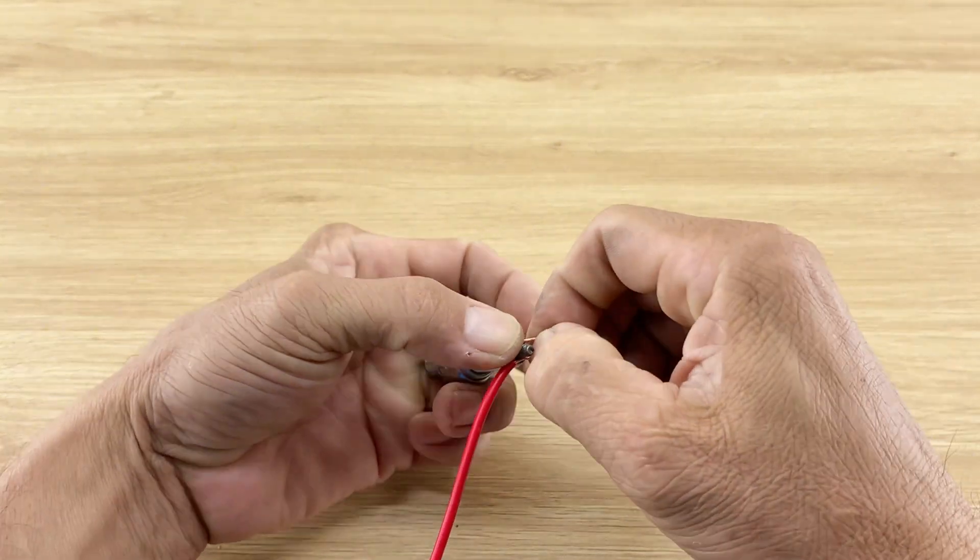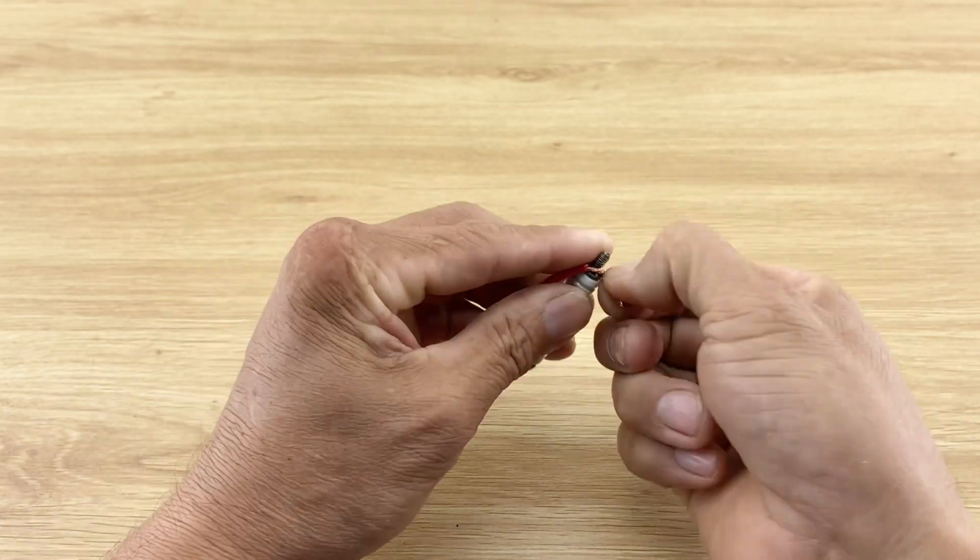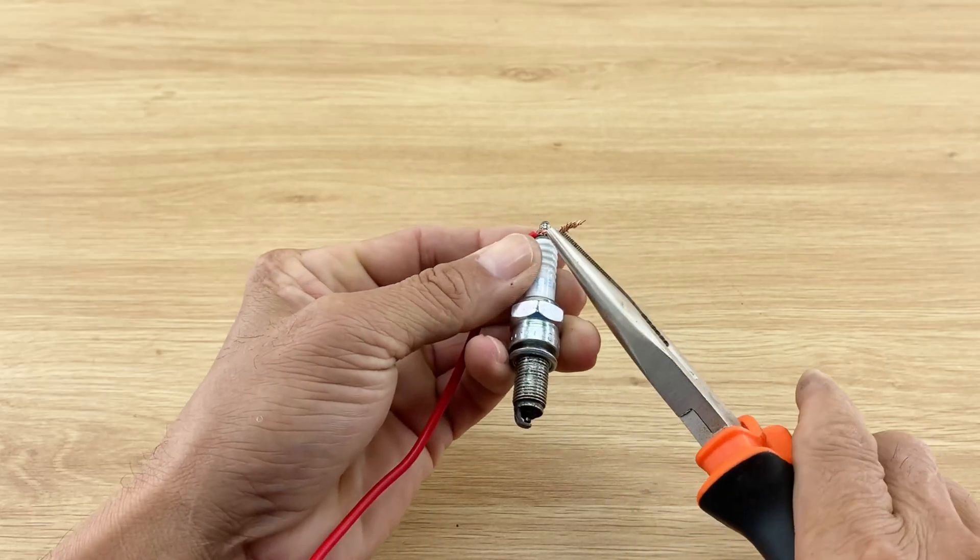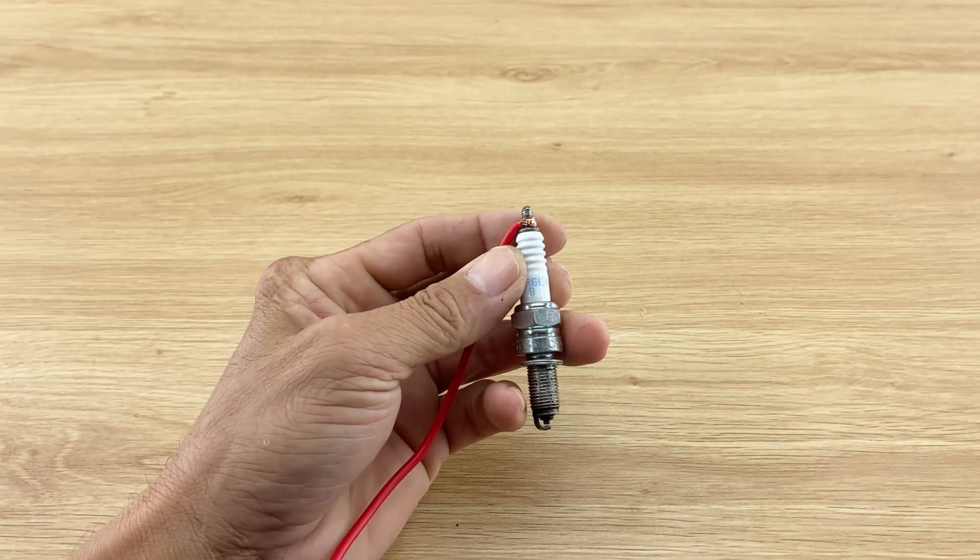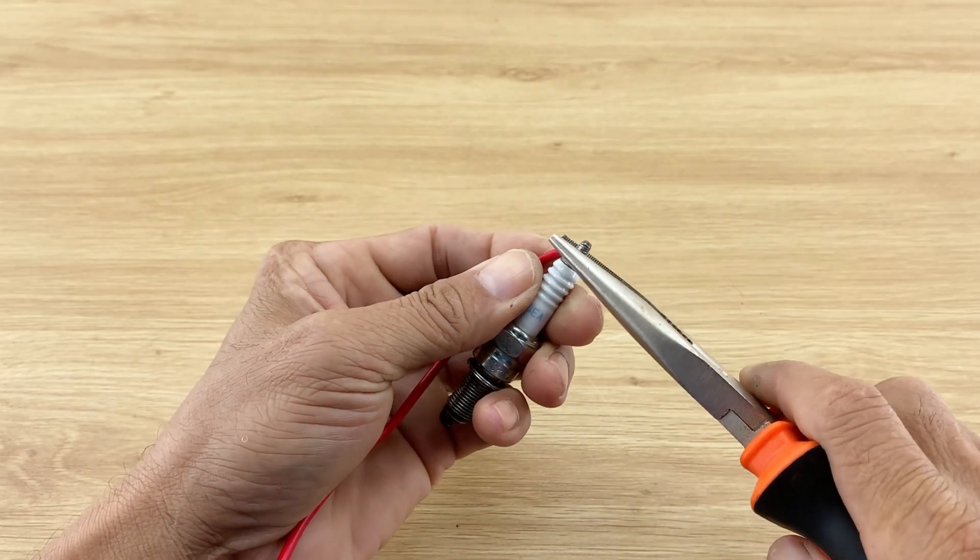Then I precisely wrapped the stripped copper wire tightly around the spark plug's tip. To further secure that connection, I use a pair of needle nose pliers to crimp the wire even tighter against the spark plug's electrode. This extra step is vital for ensuring excellent conductivity and durability.